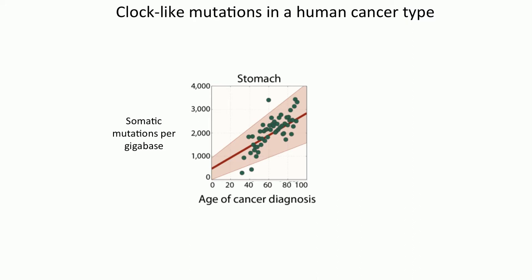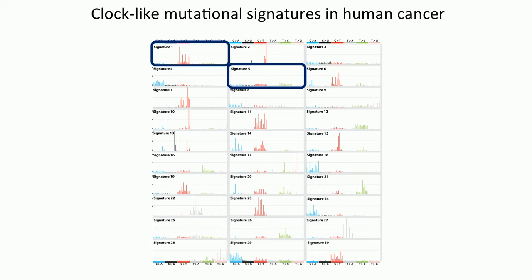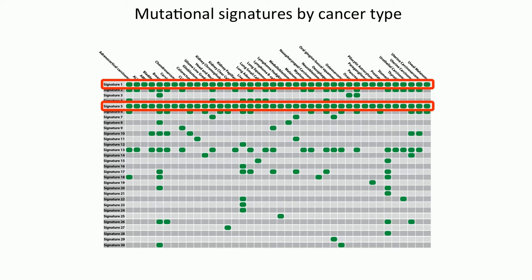We looked at about 12,000 cancer samples to find mutational signatures behaving in a clock-like manner. In stomach cancers — roughly 100 samples — plotting somatic mutations per megabase against age of diagnosis, we clearly saw that for at least one signature there was accumulation with age: the older the person at diagnosis, the more mutations from that signature. Across the 30 signatures known in human cancer, we identified two that accumulated with age: signature 1 and signature 5. We saw them in every single cancer type and in almost every single cancer patient, as expected.